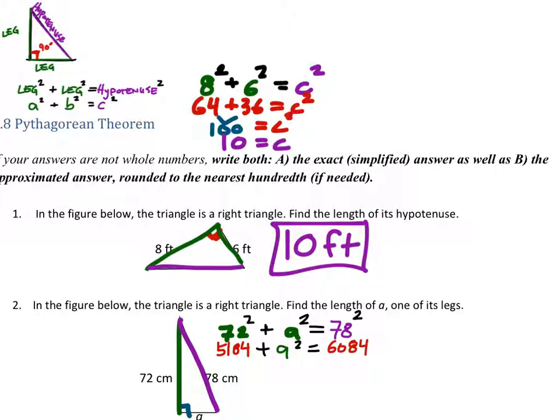So I've got 5,184 and 6,084. Now, to solve for A squared, I'd have to subtract 5,184 from both sides. And that leaves me with A squared equals 900.